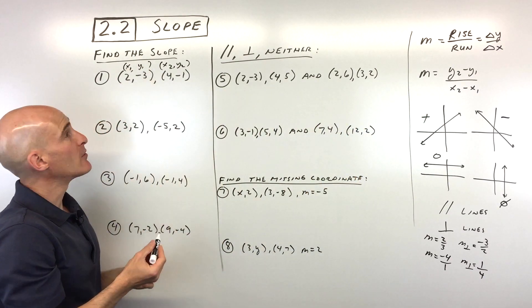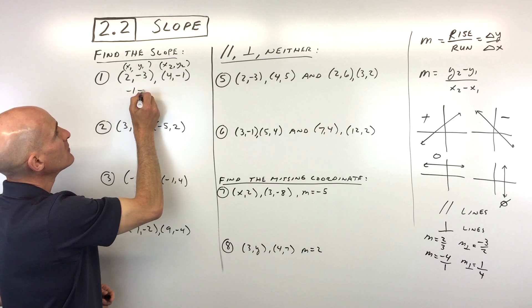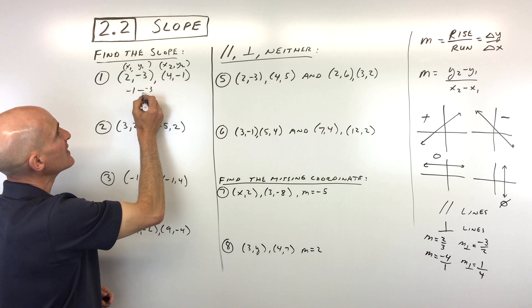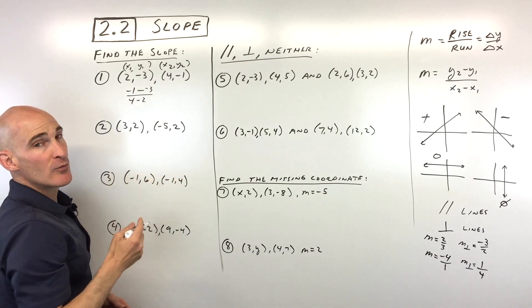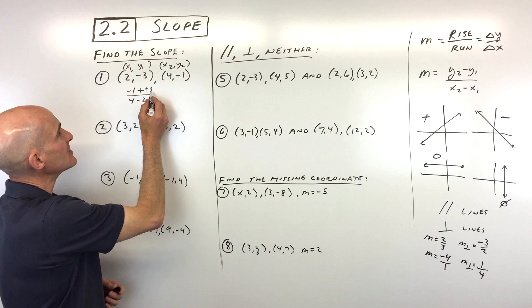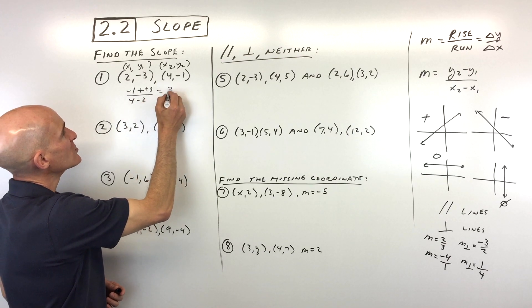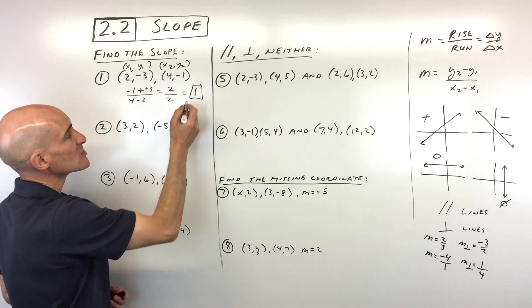And you can do that if you like. But basically what we're going to do here is we're going to take the y2 coordinate, so negative 1 minus the y1 coordinate, which is negative 3, over x2 minus x1. Now be careful with the positive and negative signs. When you subtract, it's like adding the opposite. So really we have -1 + 3, which is 2, over 4 - 2, which is 2, and 2 divided by 2 gives us a slope of 1.